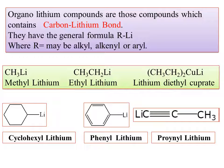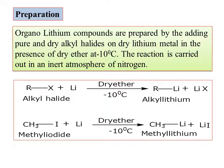For organolithium compounds, examples include CH3-lithium, ethyl lithium. The carbon bonded to lithium can be part of a single bond, double bond, triple bond, or a cyclic compound — all featuring a carbon-lithium bond.